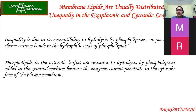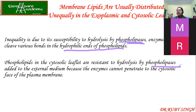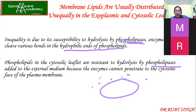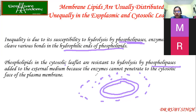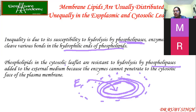There are many isoforms of phospholipase. Isoforms perform similar functions but differ in their amino acid sequences. Phospholipids in the cytosolic leaflet are resistant to hydrolysis by phospholipases because the enzyme is present outside the cell. Since the enzyme cannot cross the plasma membrane, it cannot cleave the inside phospholipids — only those present on the outer membrane, such as PC and sphingolipids, undergo the action of phospholipases.